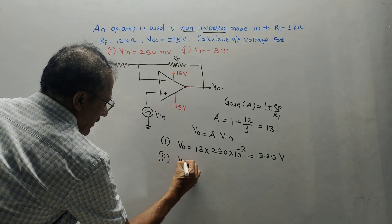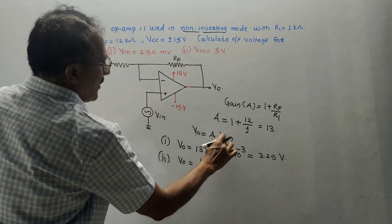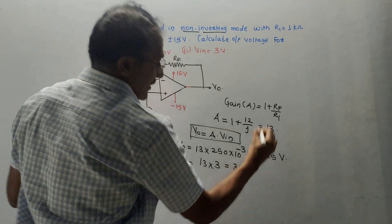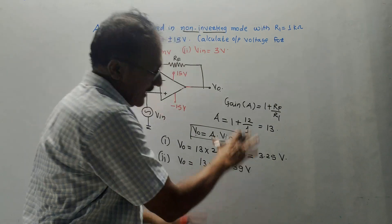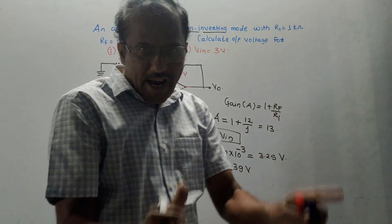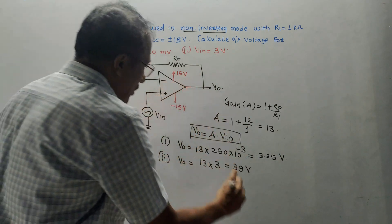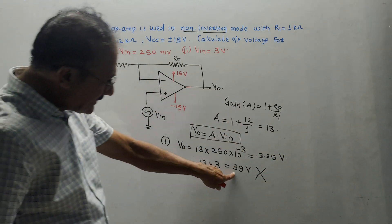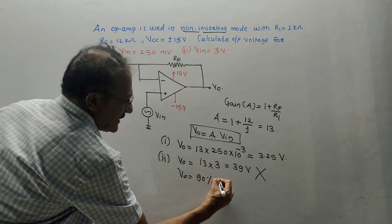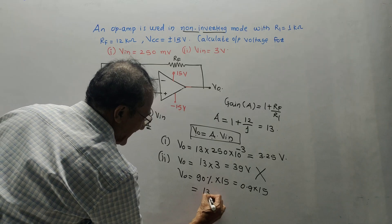For part 2, the theoretical answer of 39 volts is not a valid answer. In case of Op-Amp, the supply voltages are ±15 V, so maximum output is 90% of the supply voltage, which is 90% of 15 volts = 0.9 × 15 = 13.5 volts. Since 39 V exceeds VCC, the practical output is 13.5 volts.